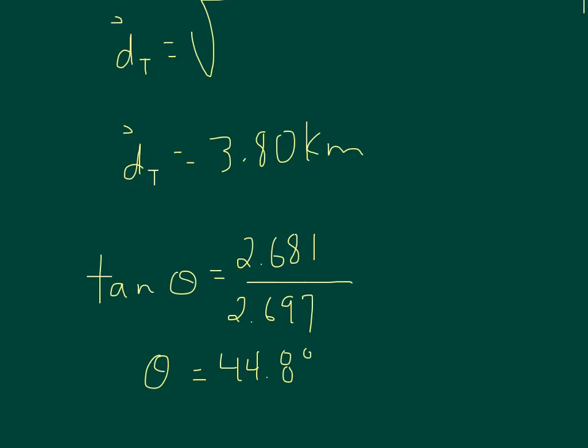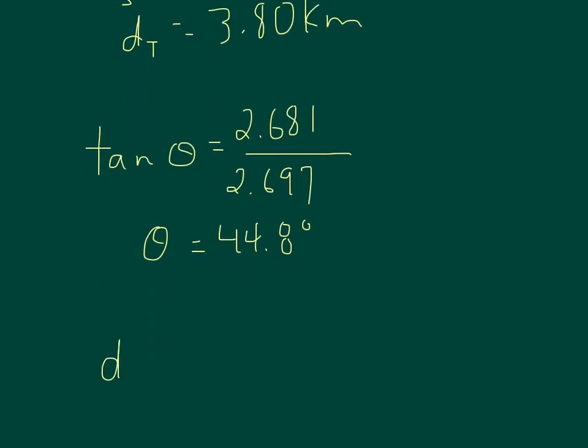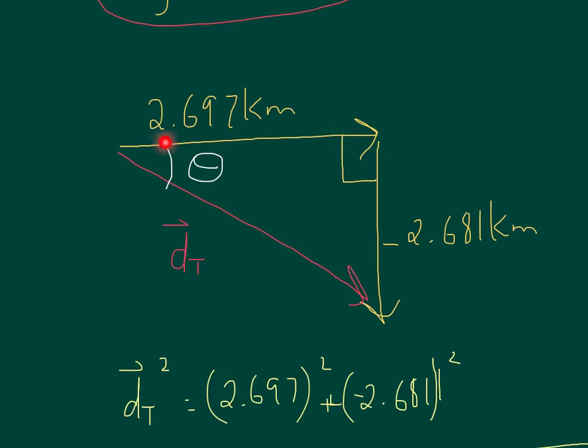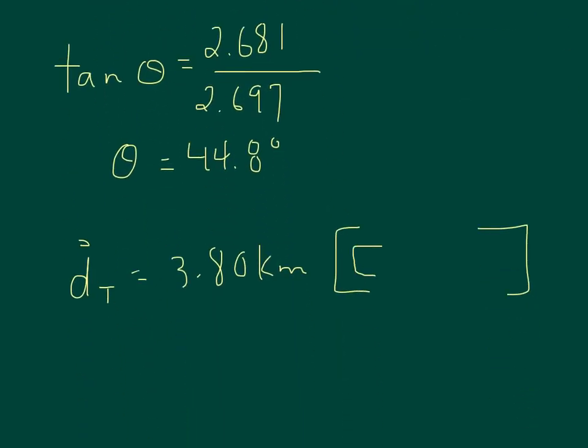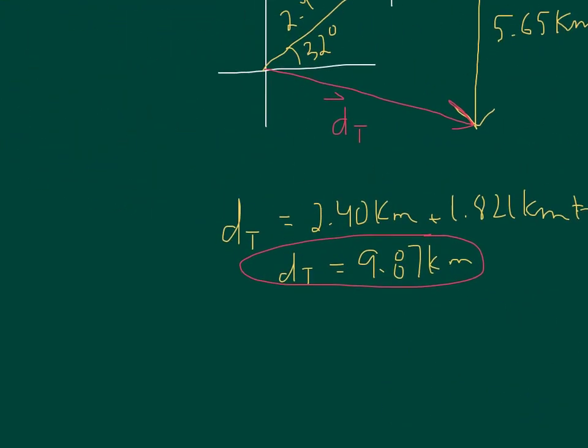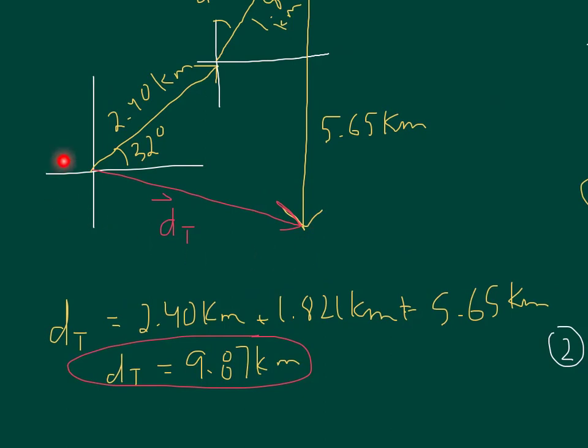Which means my final answer is 3.80 kilometers with a vector direction of, let's go back up and have a look. This is heading towards the east. So it's east but 44.8 degrees towards the south. So east 44.8 degrees south. And there is my final vector answer. Now if we went back to the original diagram, this was the quantity we were looking for right here. So this is in fact our 3.80 kilometers and the angle right here, even though the diagram doesn't look like it because it was just a sketch, this is an angle of 44.8 degrees.